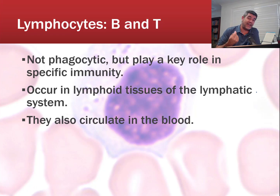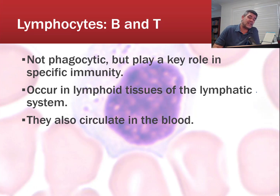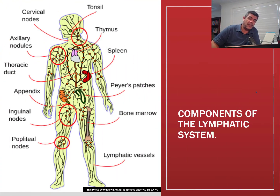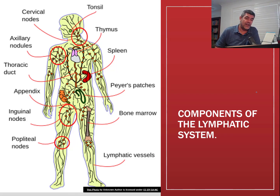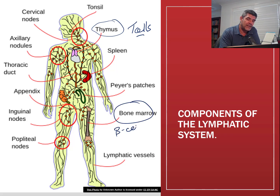This is where we shift from innate immunity, covered by the first and second lines of defense, to adaptive immunity, which we actually acquire as we go along. The B and T cells occur in the lymphoid tissues of the lymphatic system. B cells mature in the bone marrow, while T cells mature in the thymus, and they also circulate in the blood. We don't need to spend a lot of time on the lymphatic system, but it gives an idea of its different structures. Key ones are the thymus, maturation site for T cells, and bone marrow, the maturation site for B cells.